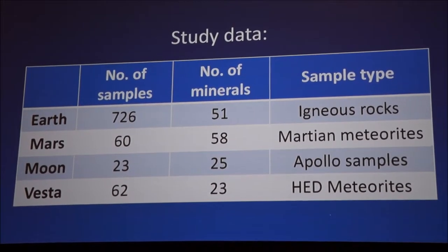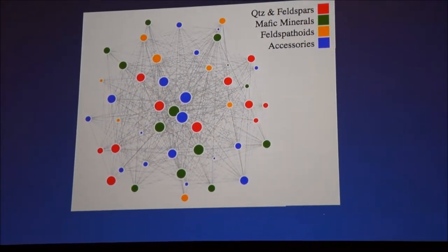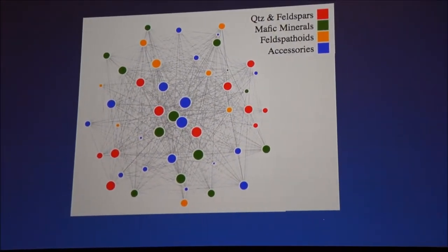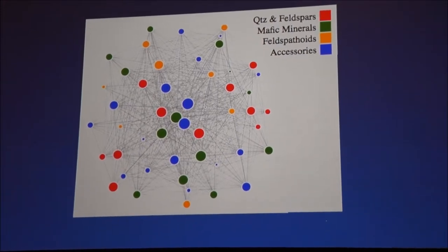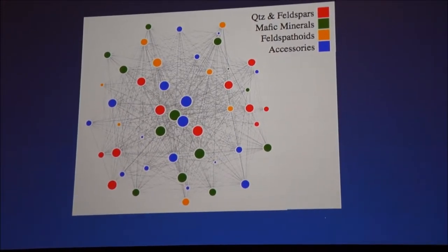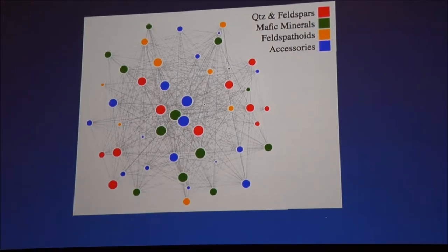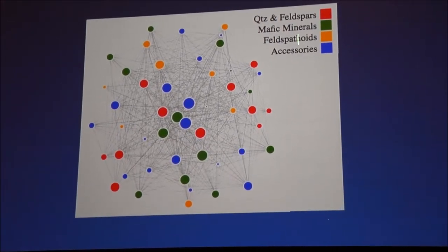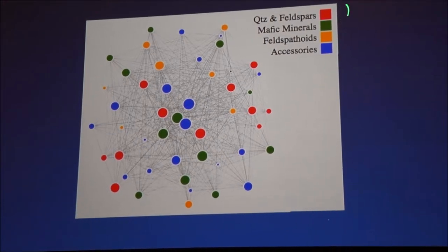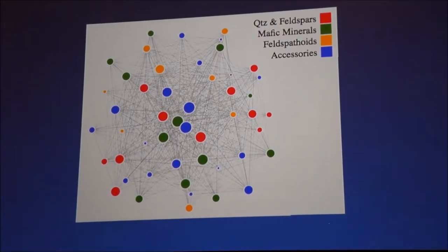So this is our data set, and I'll go ahead and show you guys a network. This is the igneous diagram. So these are the igneous minerals collected by Johansen. And you'll notice here all the nodes are colored, right? They're colored according to a really simple scheme that we came up with here. So quartz and feldspars are red, mafic feldspars are green, and so on.